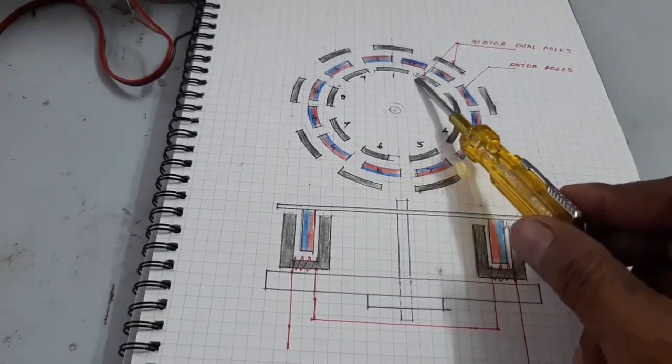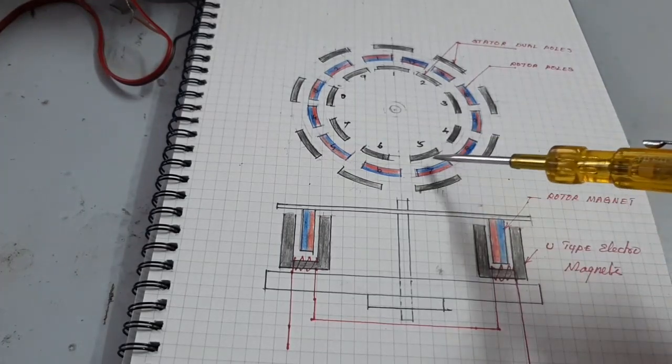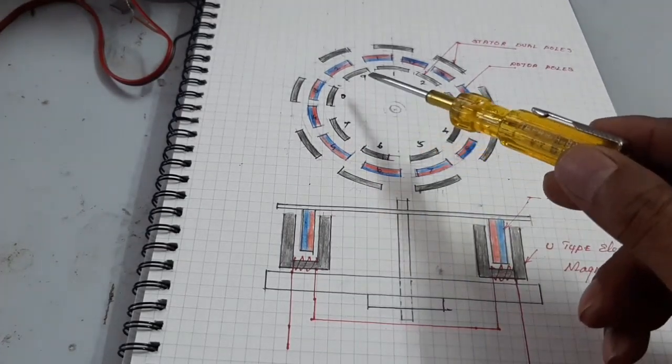Look at this. 9 dual poles. This one: 1, 2, 3, 4, 5, 6, 7, 8, 9.